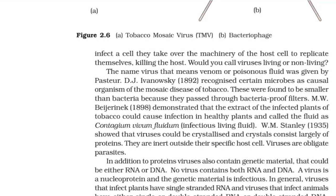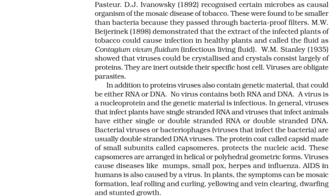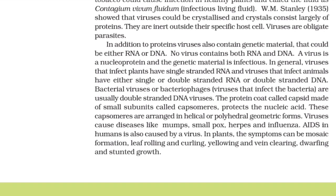The name virus, meaning venom or poisonous fluid, was given by Pasteur. T. J. Ivanovski (1892) recognized certain microbes as the causal organism of the mosaic disease of tobacco; these were found to be smaller than bacteria because they passed through bacteria-proof filters. M. W. Beijerinck (1898) demonstrated that the extract of infected tobacco plants could cause infection in healthy plants and called the fluid contagium vivum fluidum (infectious living fluid). W. M. Stanley (1935) showed that viruses could be crystallized and that the crystals consist largely of proteins that are inert outside their specific host cell. Viruses are obligate parasites. In addition to proteins, viruses also contain genetic material that could be either RNA or DNA — no virus contains both RNA and DNA. A virus is a nucleoprotein and the genetic material is infectious. Viruses that infect plants generally have single-stranded RNA, and viruses that infect animals have either single- or double-stranded RNA or double-stranded DNA.